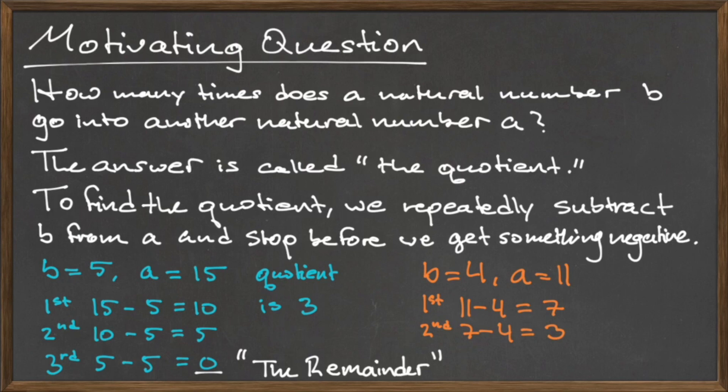Since 3 is less than 4, if we compute another subtraction, the answer will go negative. So we stop, and to find the quotient, we count the number of subtractions we performed, which is 2. So, the quotient is 2.